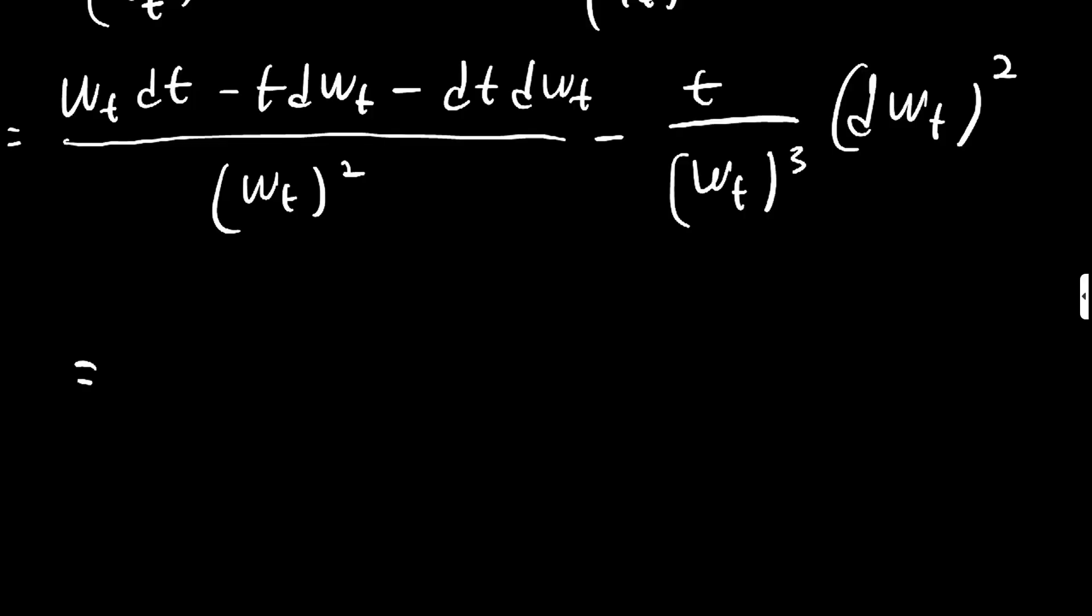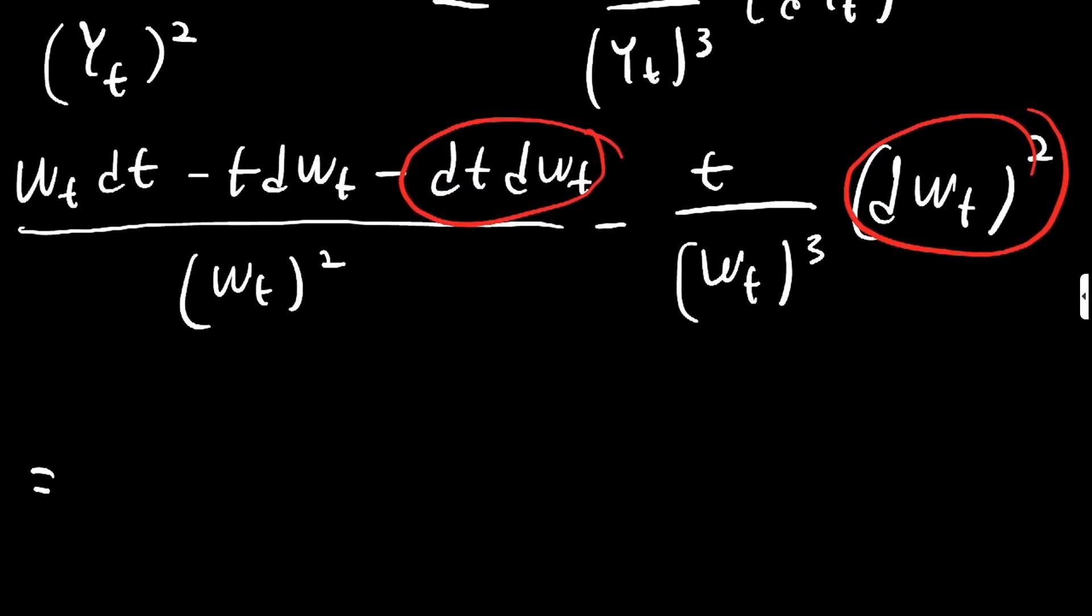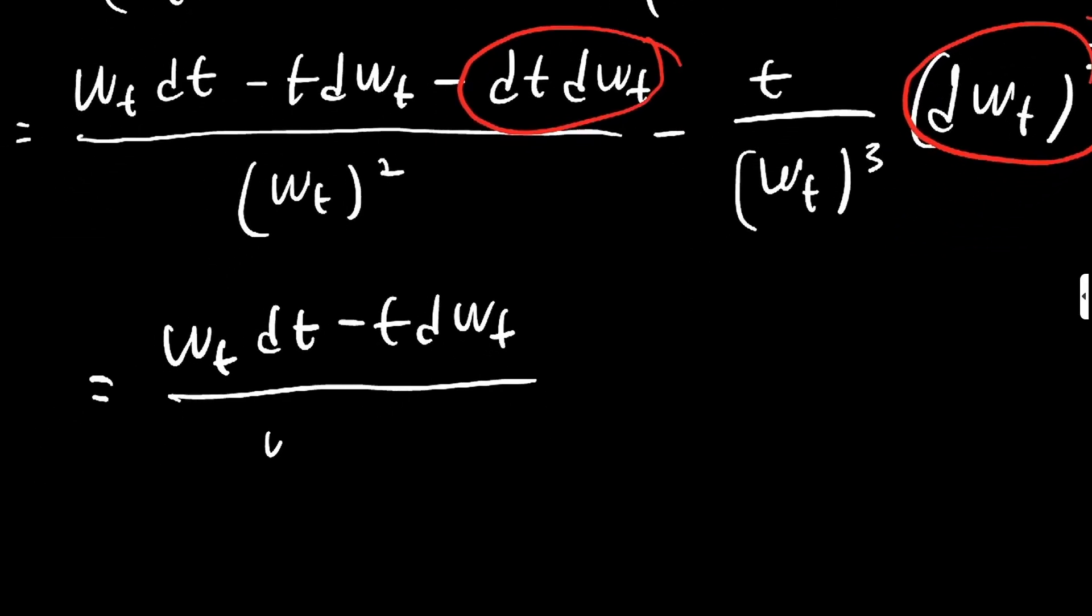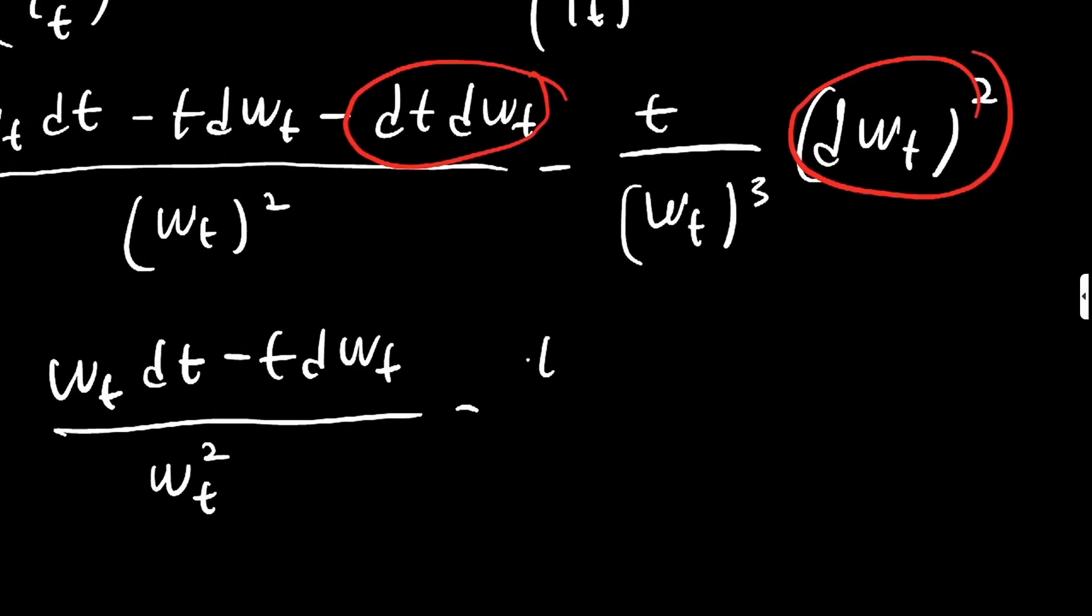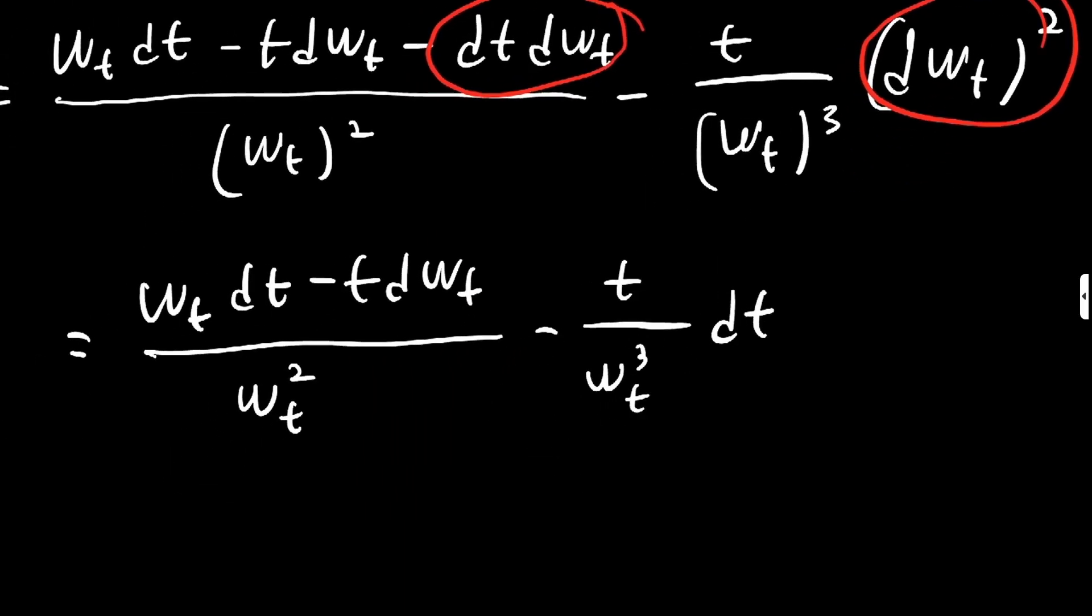There are lots of things we can actually do from here which is nice. One thing we can do is notice that these and these are identities that we can use from up here, so these identities still apply. So it'll be W_t dt minus t dW_t minus and then this will just be zero actually, so we're just going to ignore that entirely, all over the square here, minus t over the cube of Brownian motion and dW_t squared we know is just dt. And we are done.